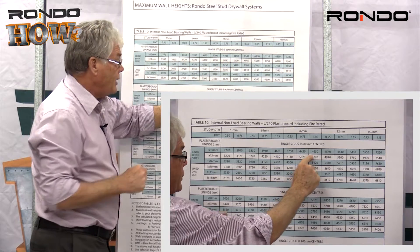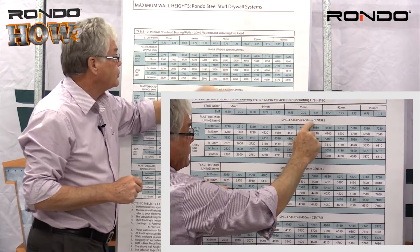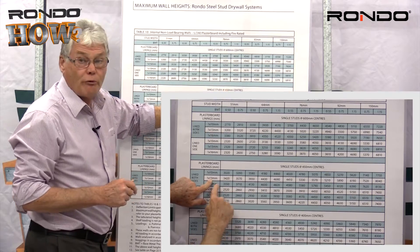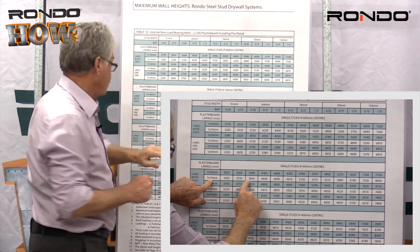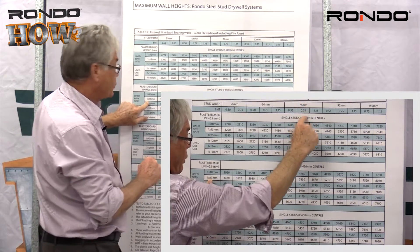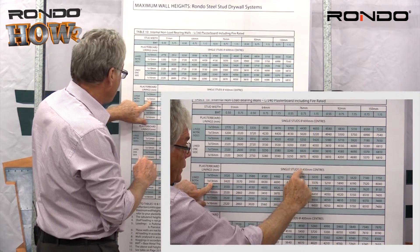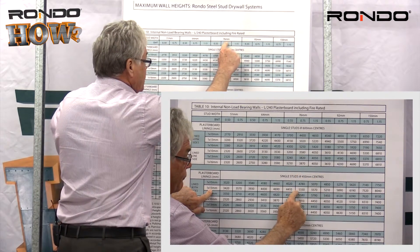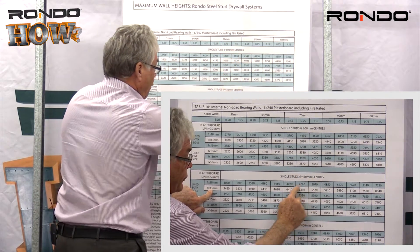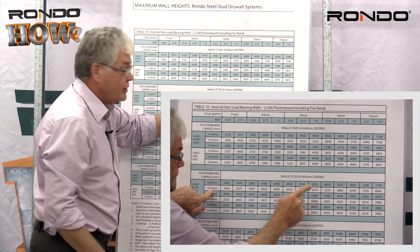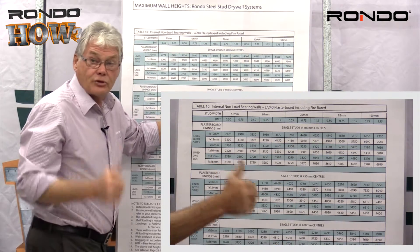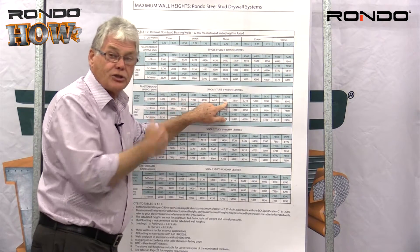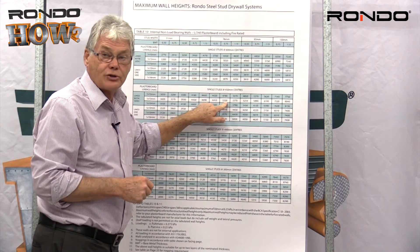So let's go down to 450mm centres, moving from 600 centres down to 450mm centres. Doing exactly the same exercise — 13mm lined both sides, 76 by 0.75 — the maximum height is 5.330m. So we could use the stud in this situation at 450mm centres.